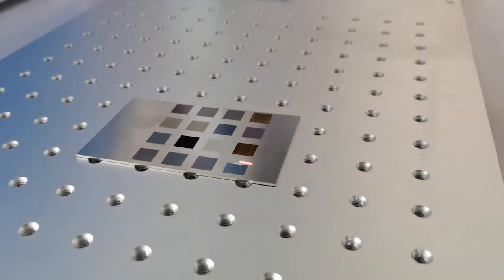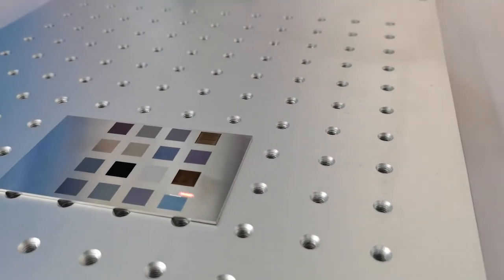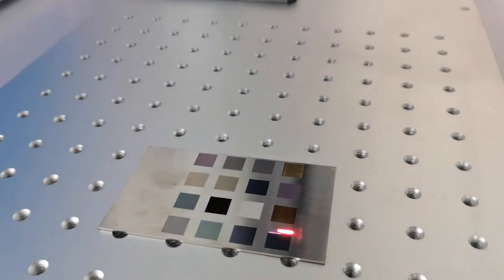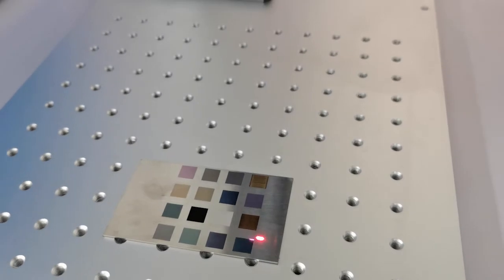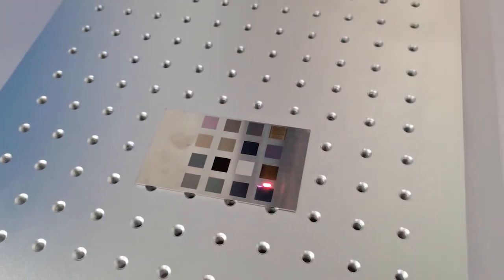You can see clearly it marks all the color. It means they can mark all kinds of color on stainless steel for MOPA marking machine.